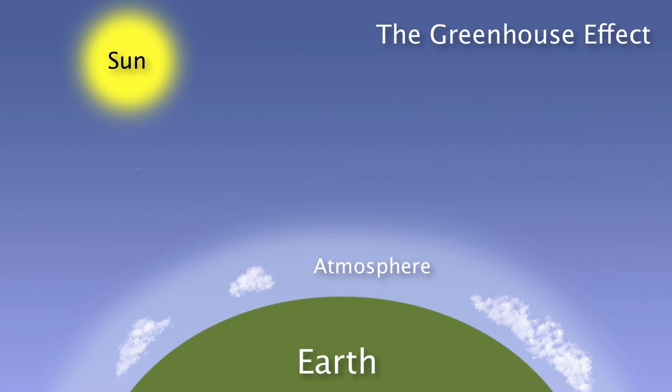Our Sun produces light, which is composed of small particles called photons. These photons pass through the atmosphere and collide with the surface of the planet.